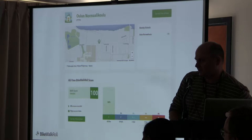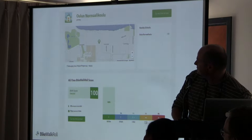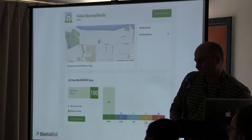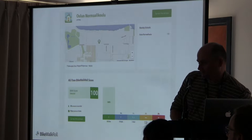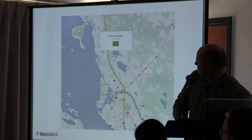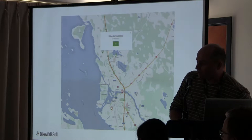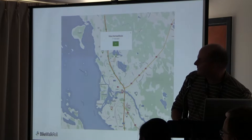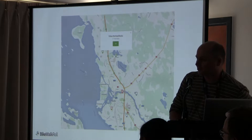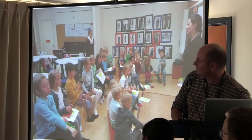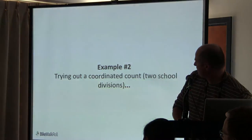To shame us as North Americans — here's a little school in Oulu, Finland. This is in the middle of winter, and their bike mode score is 100. They're up near the Arctic Circle — lots of snow and very cold — and the kids still bike. No problems. It can be done.